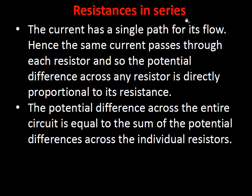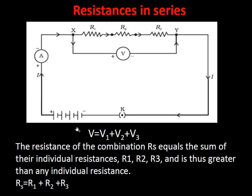In resistance in series, three resistors are connected end-to-end in a single path. The same current passes through all of them — current remains the same throughout. The total potential difference across the circuit equals the sum of individual voltages: V = V₁ + V₂ + V₃. In the circuit diagram, R₁, R₂, R₃ are resistors; an ammeter (A) is connected in series; and a voltmeter is connected in parallel. Current flows from positive to negative.